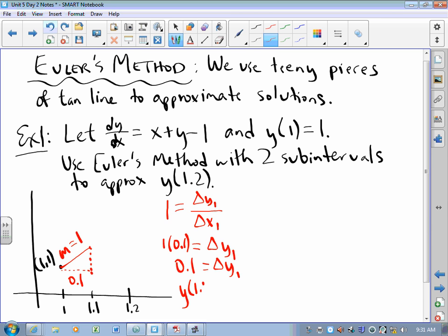So what is the y value when x is 1.1? Well, it's approximately the previous y value plus the change in y. That's 1.1. So this point here has coordinates (1.1, 1.1).